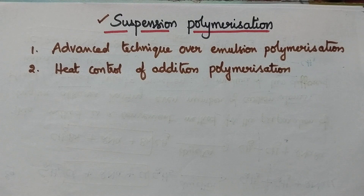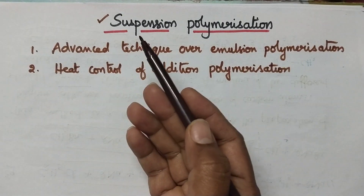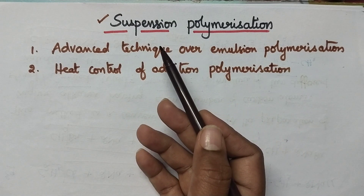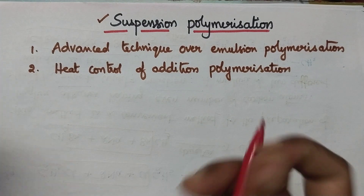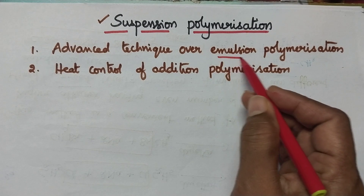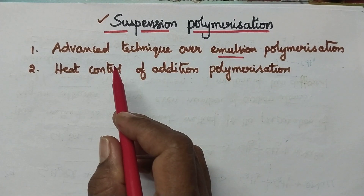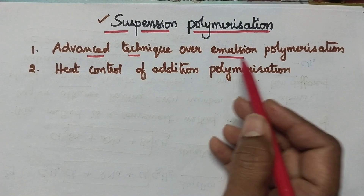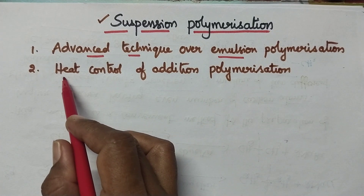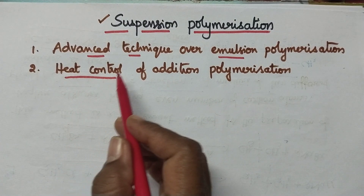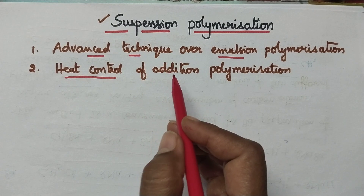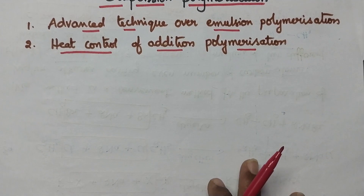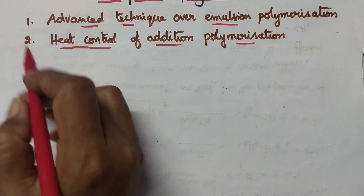Hello students, welcome back to my channel. In this video I am going to discuss in detail about the suspension polymerization. In order to overcome the drawbacks of the emulsion polymerization, suspension polymerization is developed. Suspension polymerization can be considered as an advanced technique over emulsion polymerization, and heat control is possible by using suspension polymerization, especially in the case of addition polymerization.